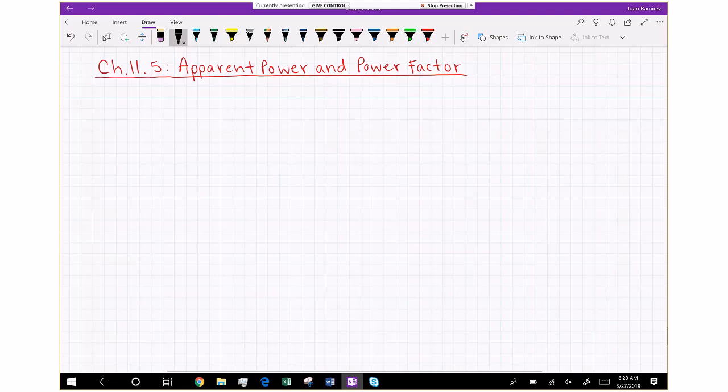Hey class, this is Juan Ramirez with EE2725 Linear Circuits 3 AC. Today we're going to cover Apparent Power and Power Factor, which for the Fundamentals of Electric Circuits book is covered in Chapter 11.5.